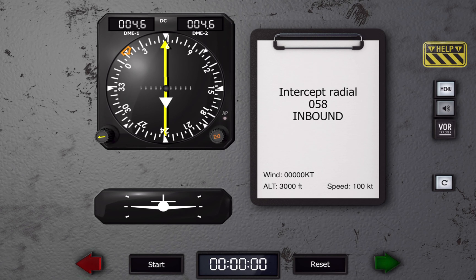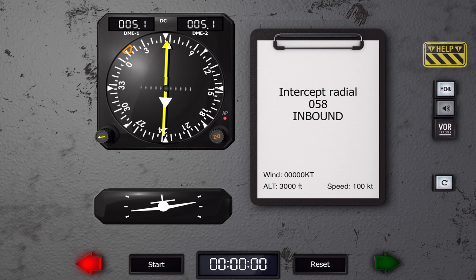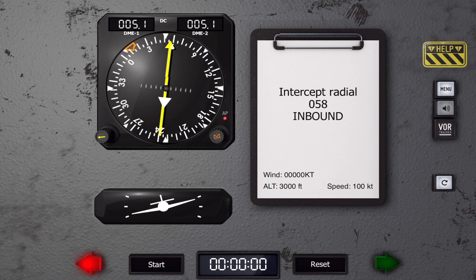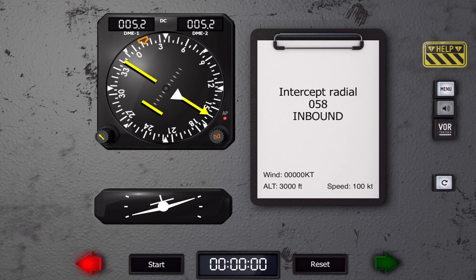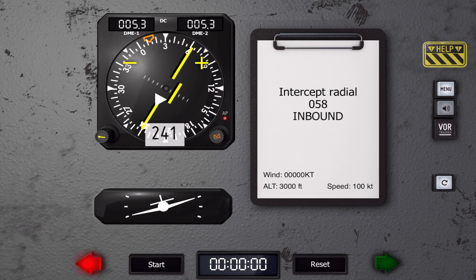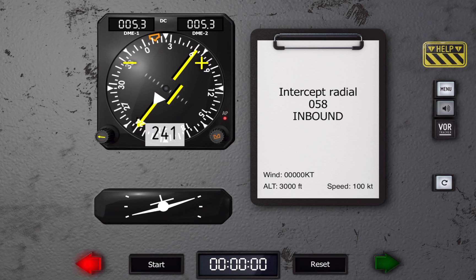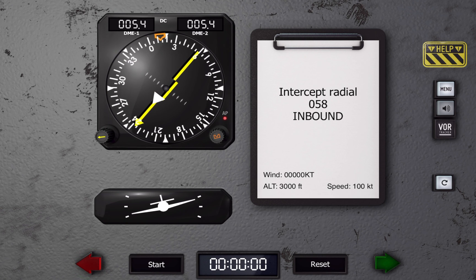And don't forget the five T's. So we are approaching our first, we're approaching the 5 DME. As we do so we will begin our turn. I'm gonna time and now we can take this moment to twist our OBS to put ourselves established on the 238, so that's gonna be our inbound course.